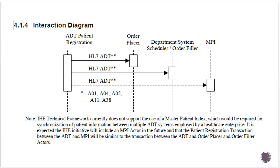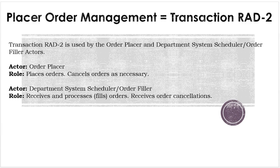Let's take a look at placer order management, transaction RAD-2. Transaction RAD-2 is used by the order placer and department system scheduler order filler actors. The order placer actor places orders and cancels orders as necessary. The department system scheduler order filler receives and processes or fills orders and receives order cancellations. Simply put, one actor puts an order in and another actor fills that order. For example, if the HIS places an order for a chest x-ray, the RIS will fill that order or mark it complete.